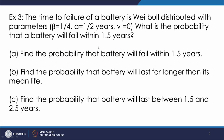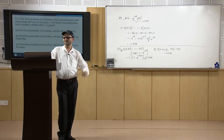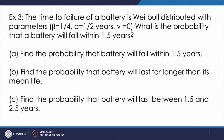The next problem states that the time to failure of a battery is Weibull distributed with parameters β = 1/4, α = 1/2 years, and ν = 0. We have to find the probability that a battery will fail within 1.5 years.